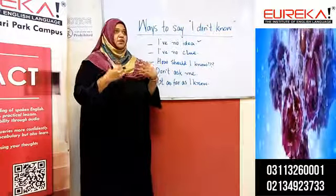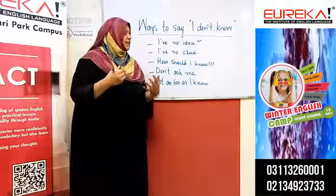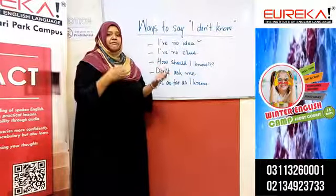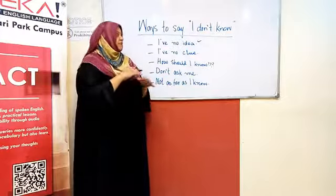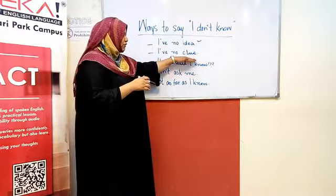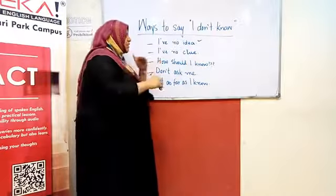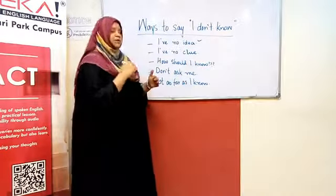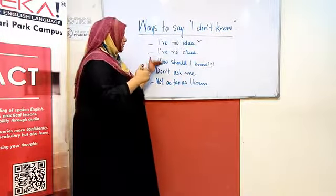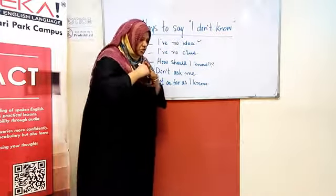Number two: 'I have no clue.' This means you don't know something and you cannot figure it out. You can use this statement when you really have no idea, because 'clue' is a replacement for 'idea.' So instead of 'I have no idea,' you can also say 'I have no clue.'